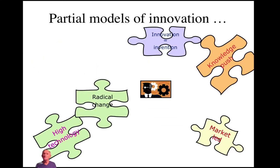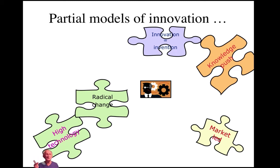'Innovation is about radical change' — well, sometimes. But as we've seen, innovation actually takes place along a spectrum, from simple incremental 'do what we do better' right through to radical 'do different' kinds of innovation. If we only focus on the radical end, what are we missing out on at the more incremental end of that spectrum?